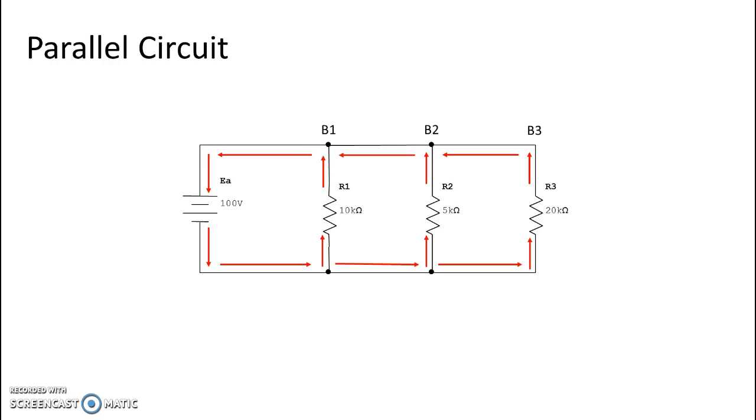In series we just added our resistors together. But in parallel, you will find that the total resistance will be smaller than the resistance of your smallest branch. So here's our formula for resistance, and you will notice that this is a one-over formula.